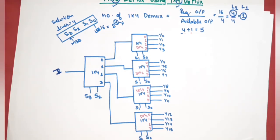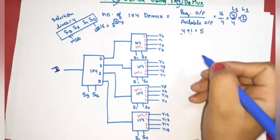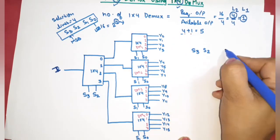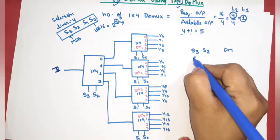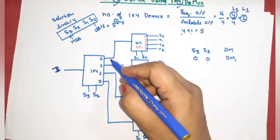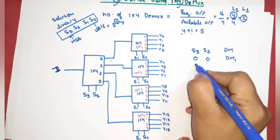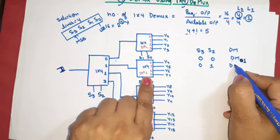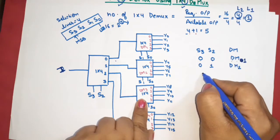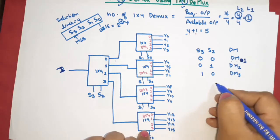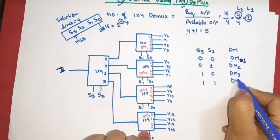Now how do we decide which of the 4 demultiplexers at label 2 will be selected? For this, the table is as follows — S3, S2: when 0,0 then dm1 is selected because input will go there. When 0,1 then dm2 is selected. When 1,0 then dm3 will be selected. And when 1,1 then dm4 is selected.